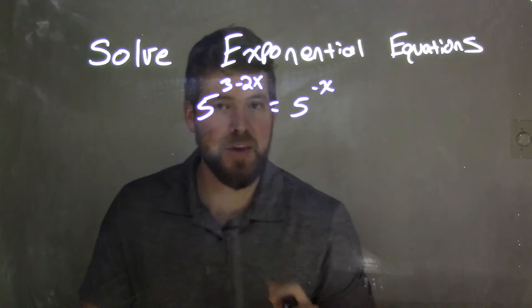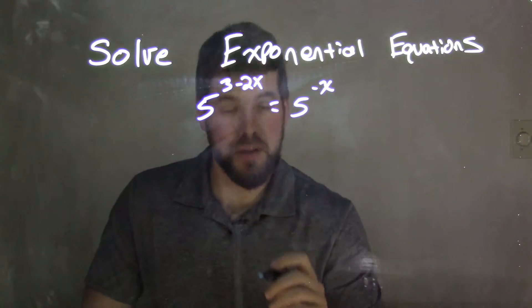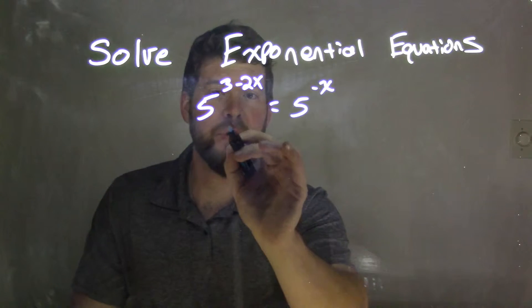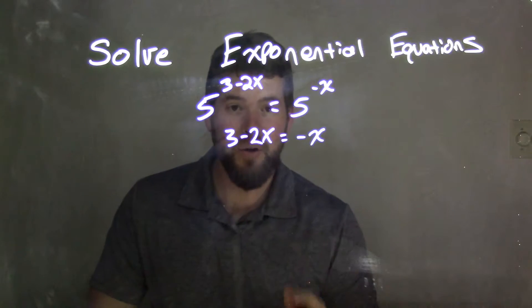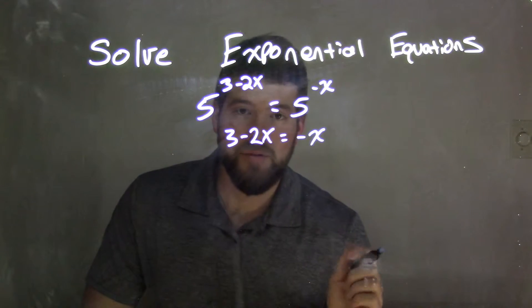With that, since we have the same base, we can set the exponents equal to each other, and we are left with 3 minus 2x equals negative x. And now we can just solve for x.